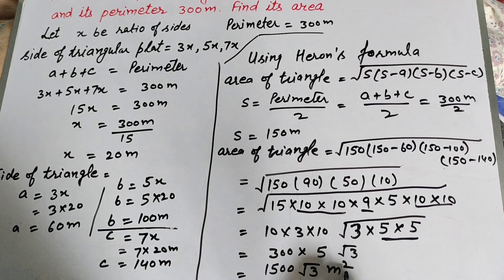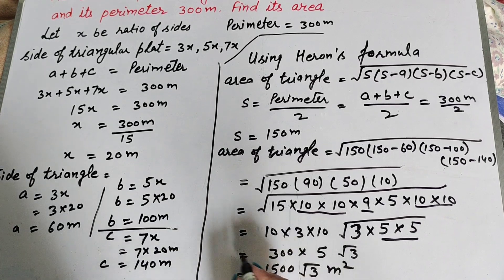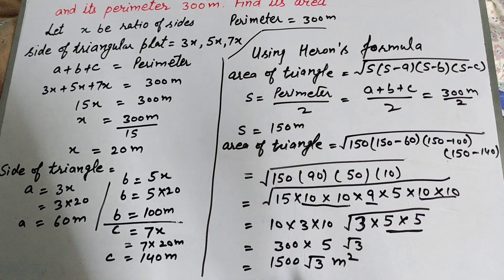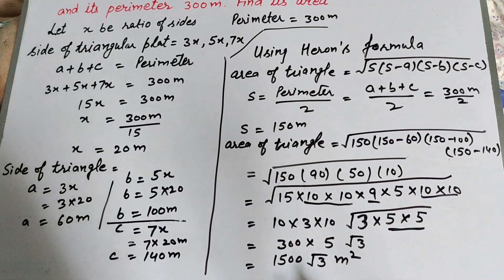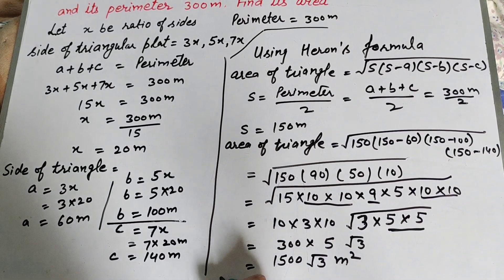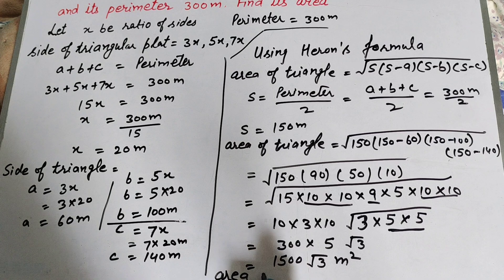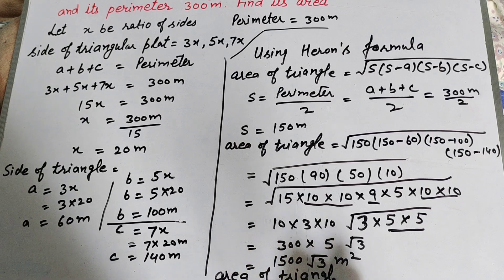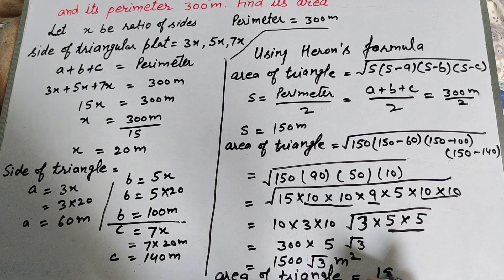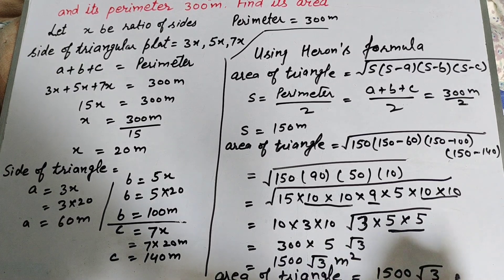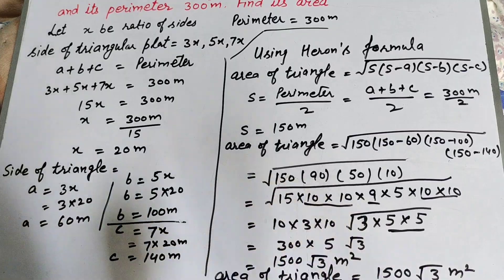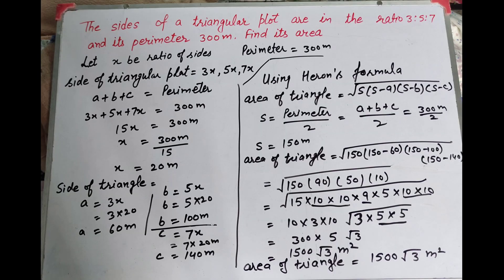So the area of the given triangular plot is equal to 1500√3 square meters. Thanks for watching — like, comment, and share my video, and subscribe to my YouTube channel.